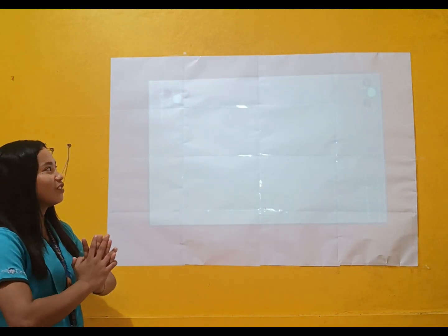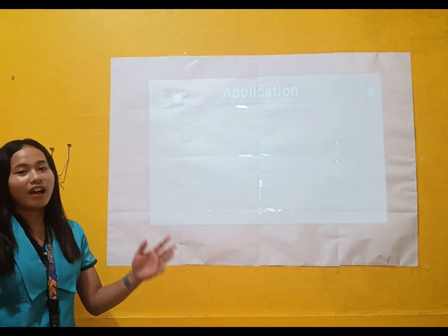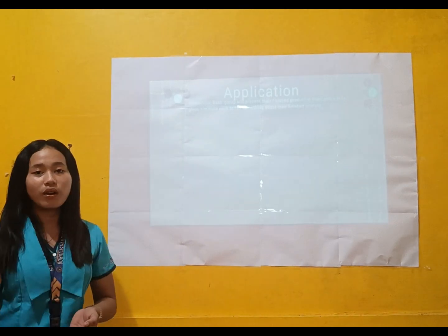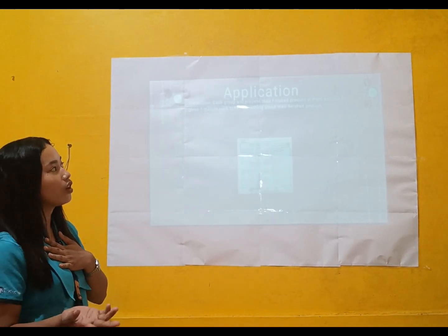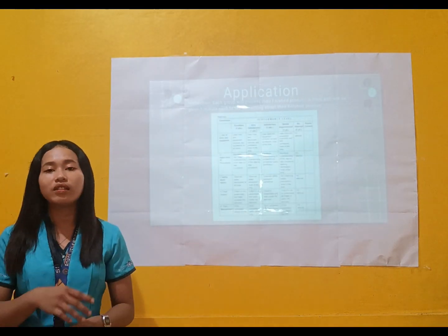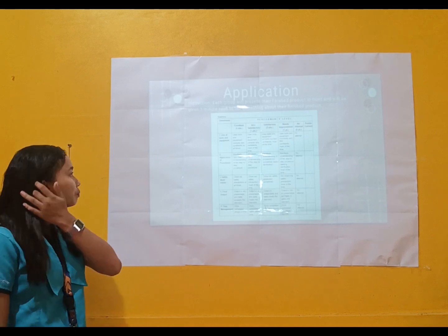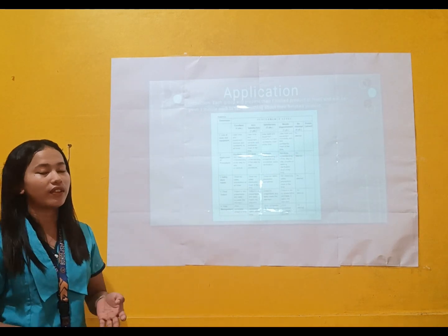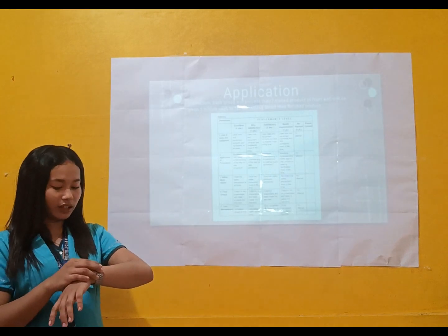Are you ready to make veggie flan? Very good. Now for our application — this is a group activity. I will group you into four, and each group must present their finished product in front. You will be given one minute each to tell something about your finished product. I'll give you one hour to prepare your veggie flan, and please check the rubrics presented for doing the veggie flan. Okay, time starts now.